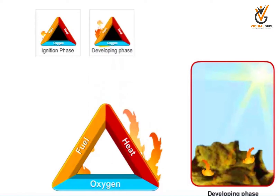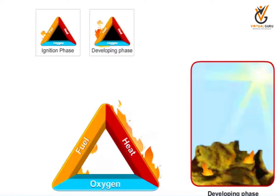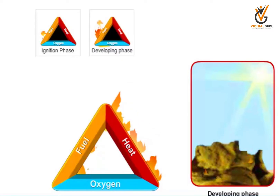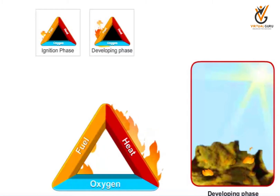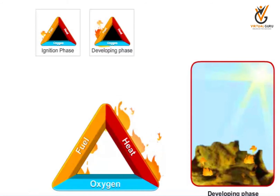Developing Phase. During the developing phase, the flame spreads on the surface of the material. After sufficient heating, it gives off vapors which act as the source of heat. Solids and liquids convert to vapor state before combustion.